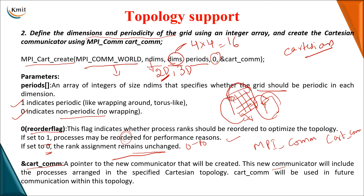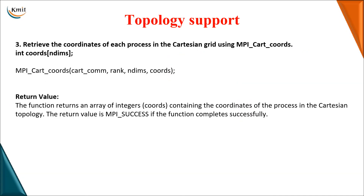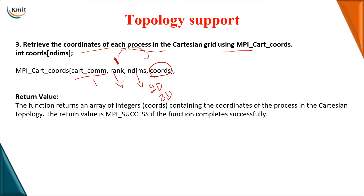To summarize MPI_Cart_create: initialize MPI environment, create the grid by specifying number of dimensions, size of each dimension, whether it is periodic, whether reordering is allowed, and the address of your Cartesian topology communicator. After that, you retrieve the coordinates of each process using MPI_Cart_coords, passing the cart communicator, the rank (process ID), and n_dimensions. The result in the coordinates array gives the position of that process.